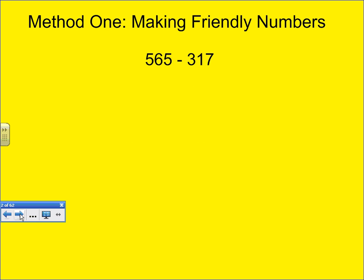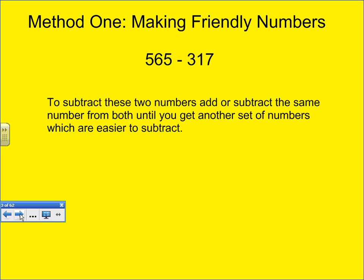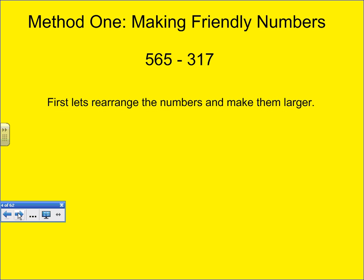The first method is called Making Friendly Numbers. To subtract these two numbers, add or subtract the same number from both until you get another set of numbers which are easier to subtract. First, let's rearrange the numbers and make them larger.